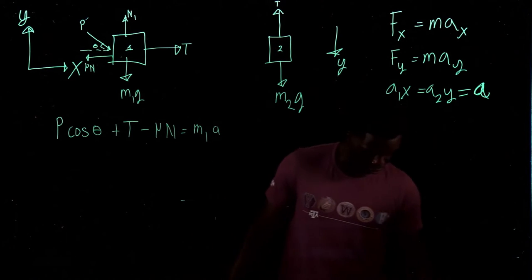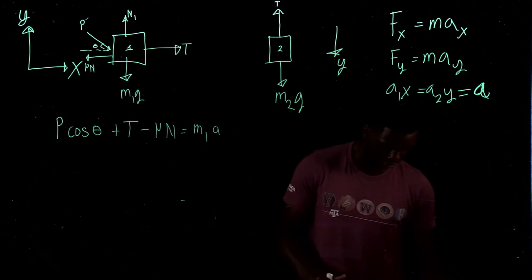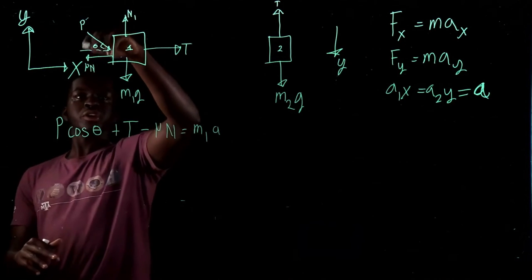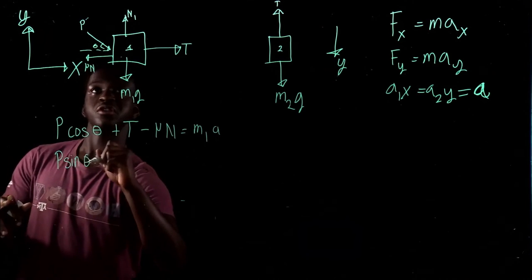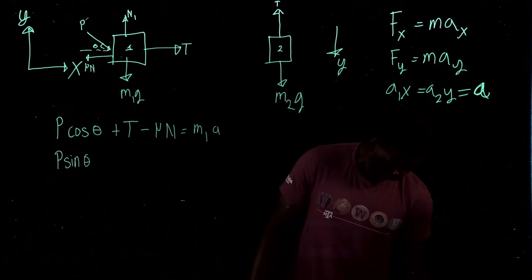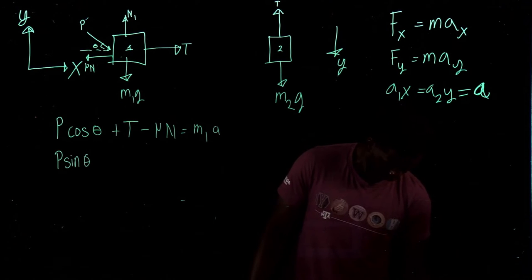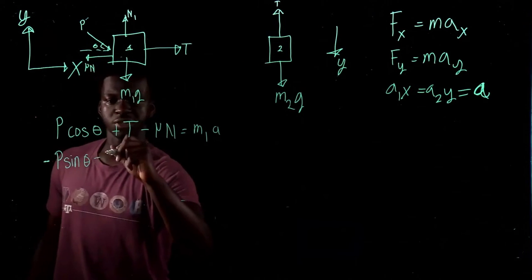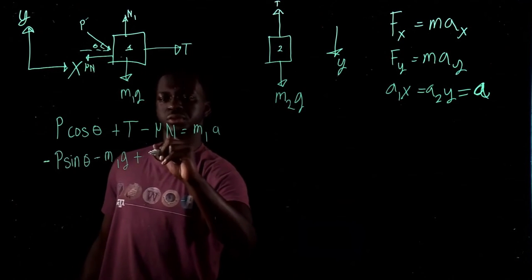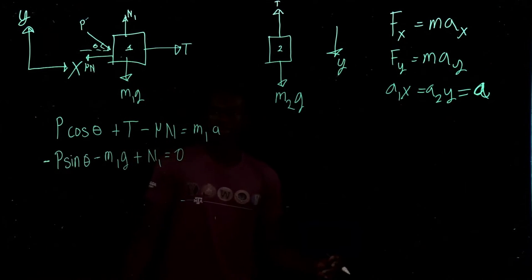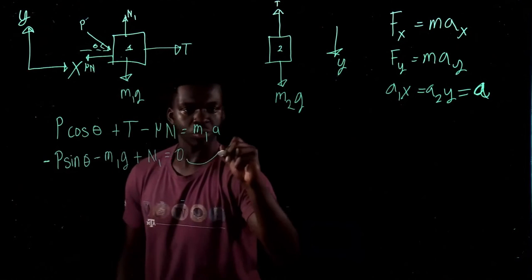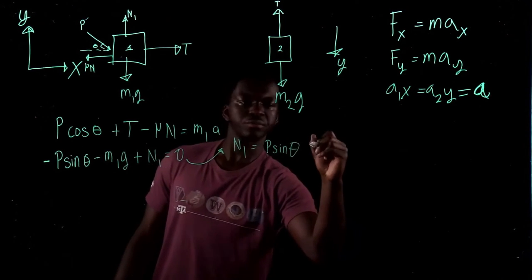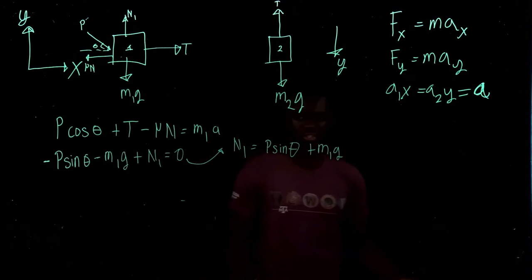For the y direction of block one, P sine theta is directed downward. So: negative P sine theta minus M1G plus N1 equals zero. Therefore N1 equals P sine theta plus M1G. Now for block two, with positive y downward: M2G minus T equals M2A.